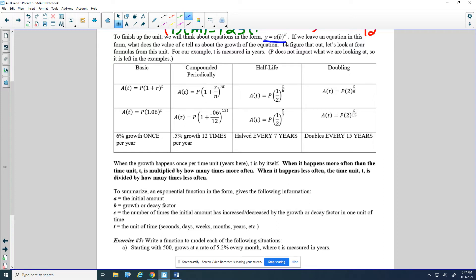To figure that out, let's look at four formulas for this unit. For our example, t is measured in years. So we're thinking it's years just to keep things consistent. p does not impact what we are looking at, so it is left in the example. p is there to point out it doesn't really make a difference. It's just a starting value.